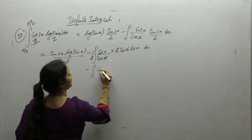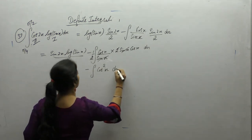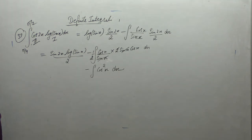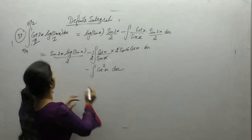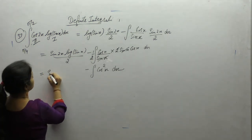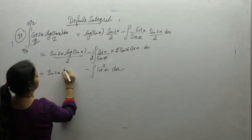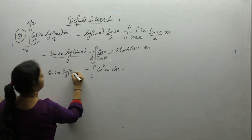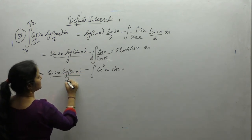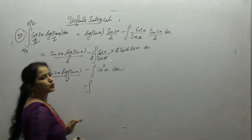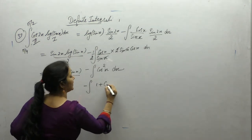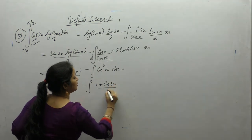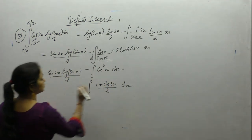Minus integral of cos square x. We don't have the formula directly for cos square x, so use the formula for cos 2x: cos 2x is 2 cos square x minus 1, so cos square x equals 1 plus cos 2x upon 2.